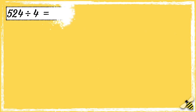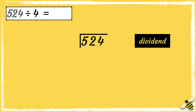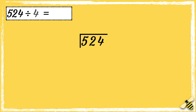Here is a number sentence: 524 divided by 4. First, we need to draw our bus stop. We put the number that we are dividing — the dividend — inside the bus stop. We put the number that we're dividing it by — the divisor — next to the bus stop.